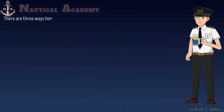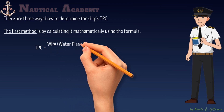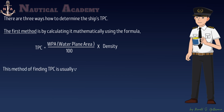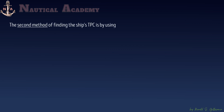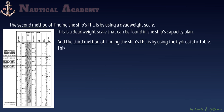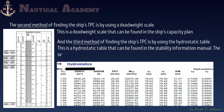There are three ways to determine the ship's TPC. The first method is by calculating it mathematically using the formula: TPC equals the waterplane area divided by 100 times density. This method is usually used for examination purposes. The second method is by using a deadweight scale, found in the ship's capacity plan. And the third method is by using the hydrostatic table, found in the stability information manual. The second and third methods are commonly used on board.